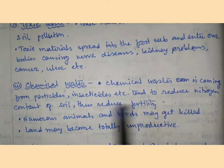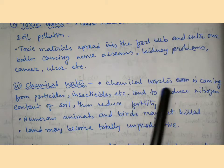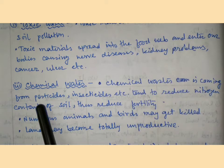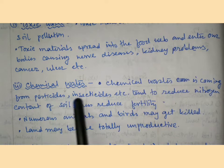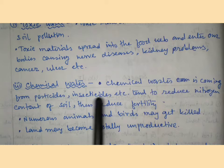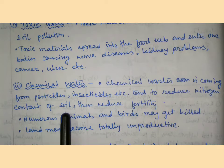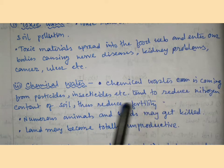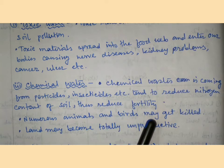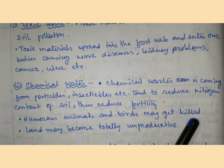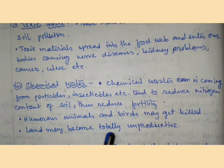Chemical waste coming from pesticides and insecticides tends to reduce the nitrogen content of soil, thus reducing its fertility. Numerous animals and birds may get killed, and land may become totally unproductive.